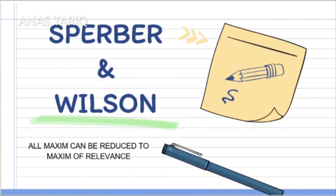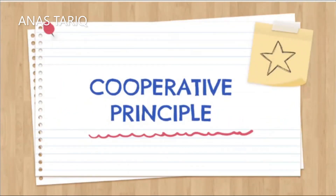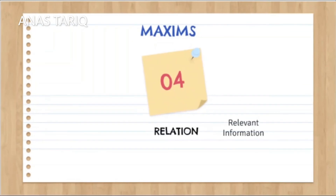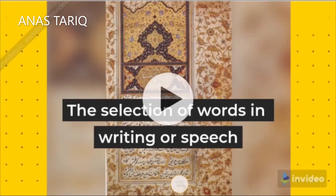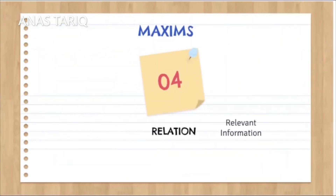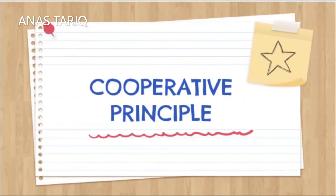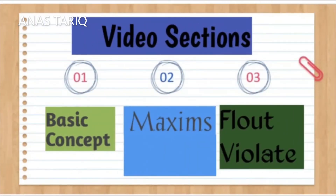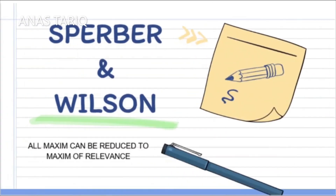So this is a detailed video in which we discussed the cooperative principle, the basic concept, the maxims, how maxims can be floated or violated, and we also discussed Sperber and Wilson. I hope it will be helpful. Thanks for watching.